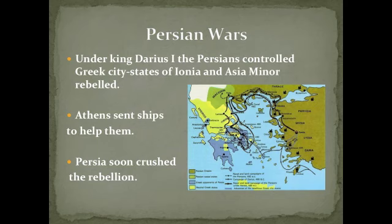Athens helped them — they sent ships to help with the rebellion, which was the beginning of the trouble between the Greeks and the Persians. The Persians soon crushed that rebellion, but Darius was furious with Athens for playing a role in the uprising. And in time, he sent a huge force to punish them.